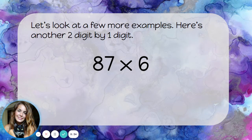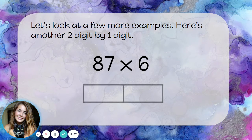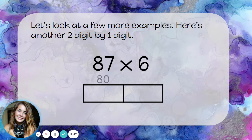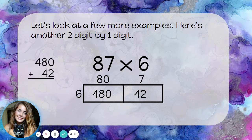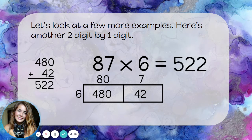Let's look at a few more examples. Here's another 2-digit by 1-digit problem. I start by drawing a 2-by-1 array. I'll break apart the 2-digit number 87 into 80 and 7, and the 1-digit number 6 goes along the side. Now I multiply the pieces: 8 times 6 is 48, so 80 times 6 is 480. And 7 times 6 is 42. Adding the partial products: 480 plus 42 is 522. So 87 times 6 equals 522.